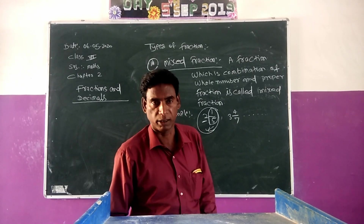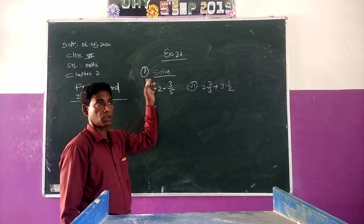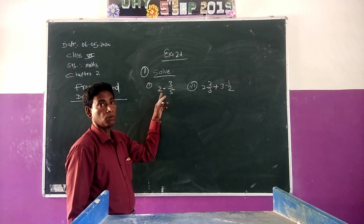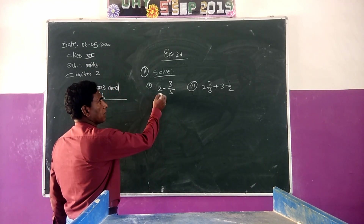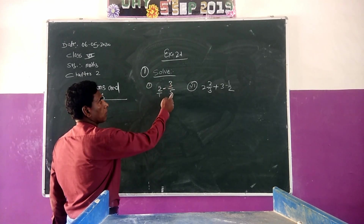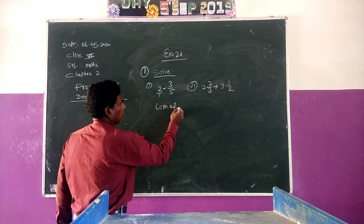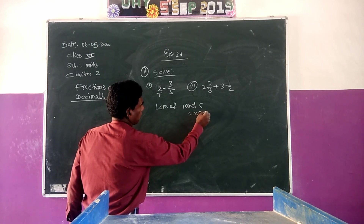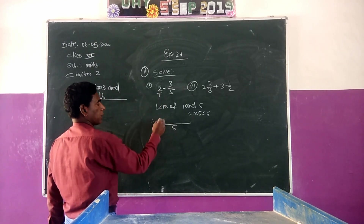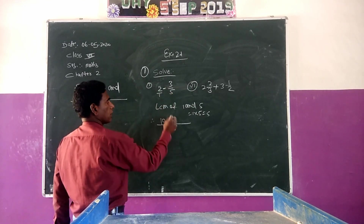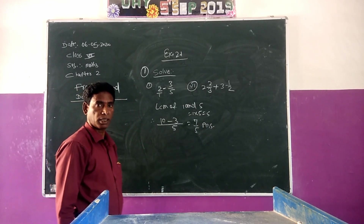Now we are going to start Chapter 2.1. I am going to solve Exercise 2.1, first portion, first question: 2 minus 3 by 5. It is subtraction of fractions. We can write 2 as 2 by 1. Now 2 by 1 minus 3 by 5. We take the LCM of 1 and 5, which is 5. Dividing and multiplying, we get 10 by 5 minus 3 by 5, which equals 7 by 5.